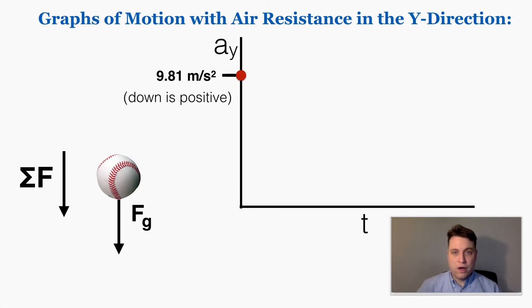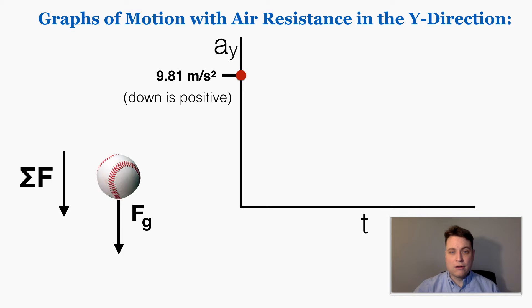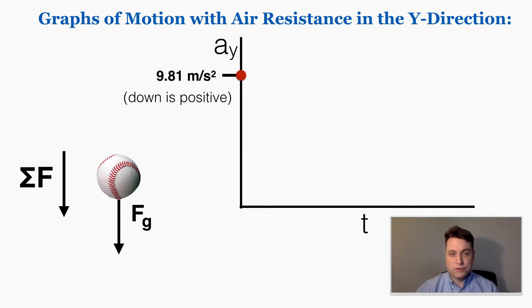We can also graph the motion of objects experiencing air resistance using position, velocity, and acceleration graphs. We normally only pay attention to the y-direction when graphing objects with air resistance, so this lecture will focus only on those. Let's start with an object in free fall through the air — it starts in free fall, but as it moves through the air, air resistance begins to pick up.